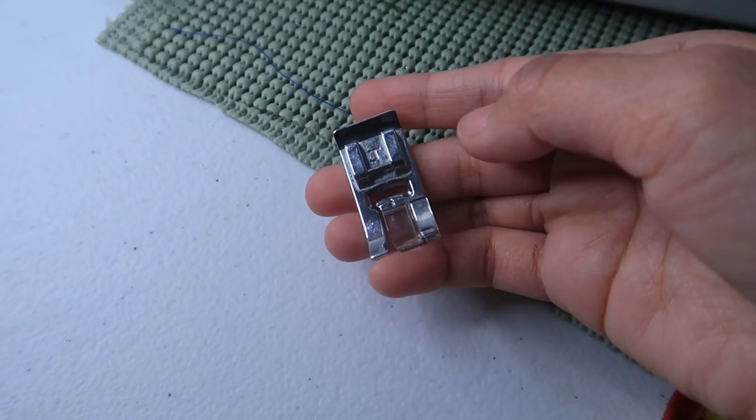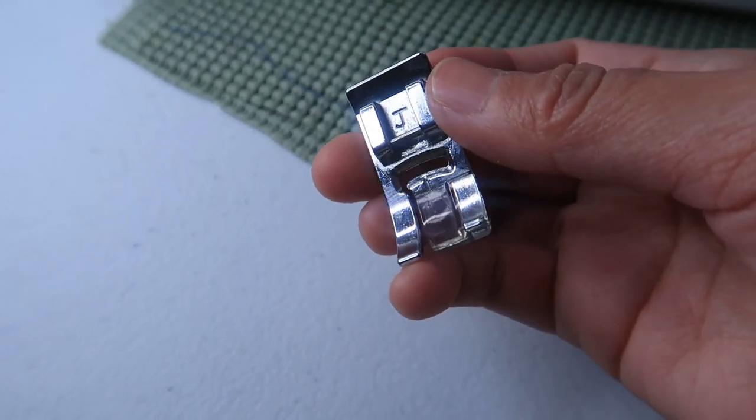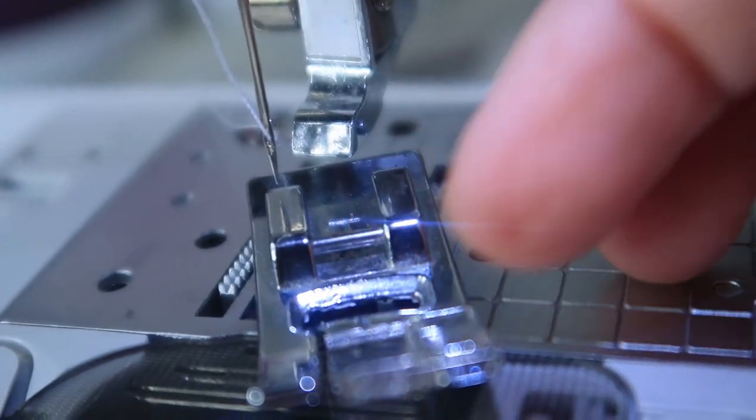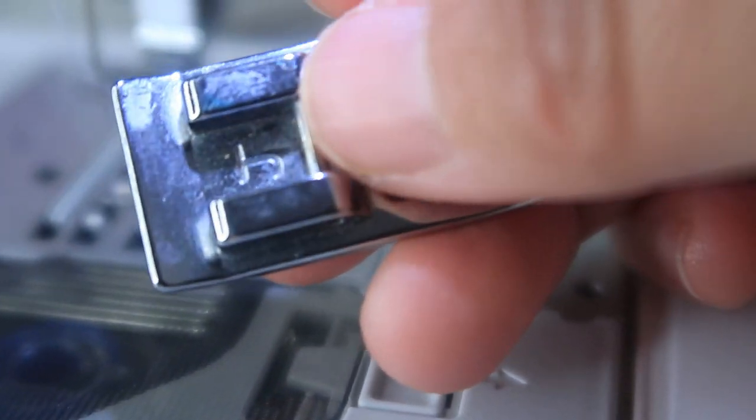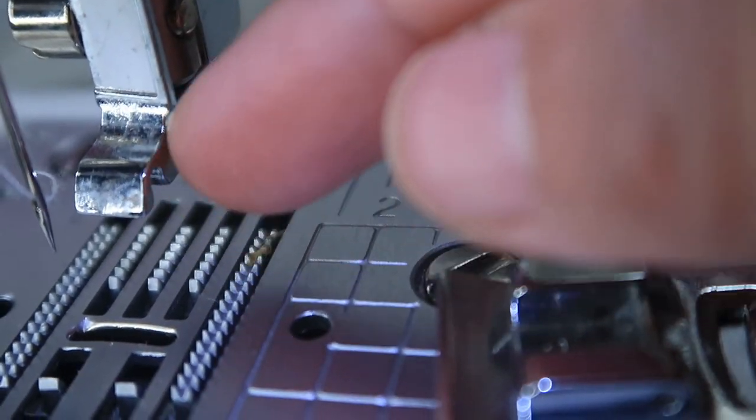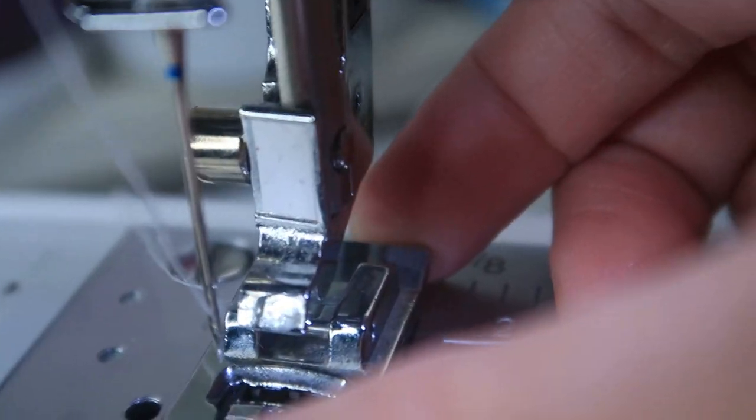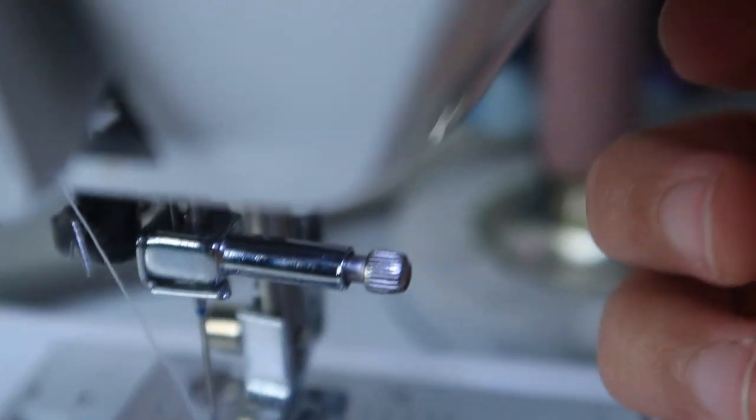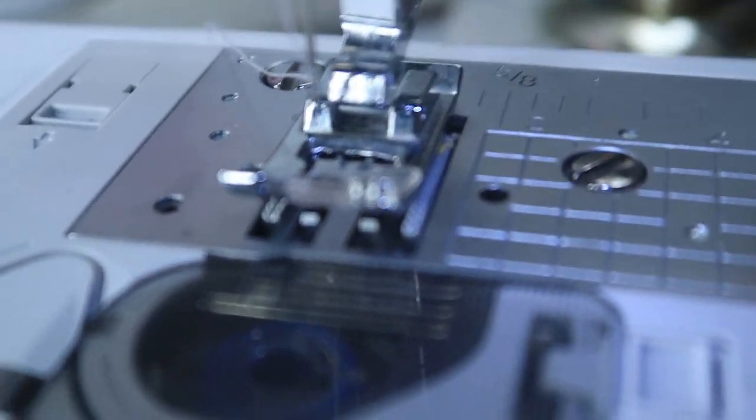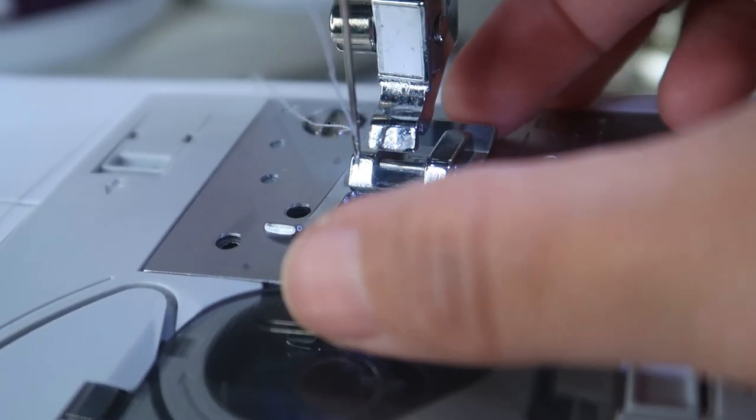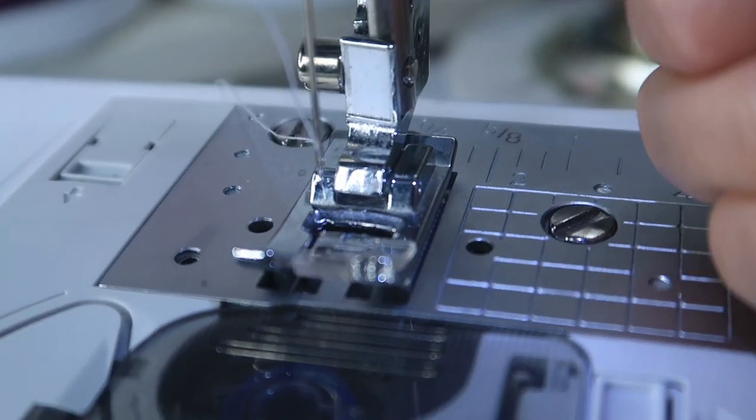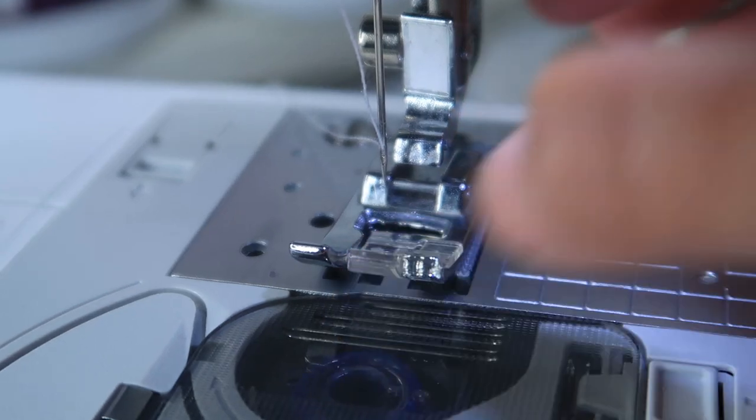Now it's time to put the presser foot. I'm using this letter J, it is the most useful presser foot. This center piece, this line here at the center, should go in this curve here. To do that, you need to press this down. It's crooked, now let's do it again. Just keep trying and here you go.